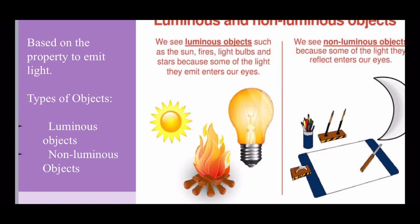An object that doesn't emit light is called a non-luminous object. For example, animals, birds, plants, chair, table, book, wall, and so on. Even the moon is non-luminous because it reflects sunlight.